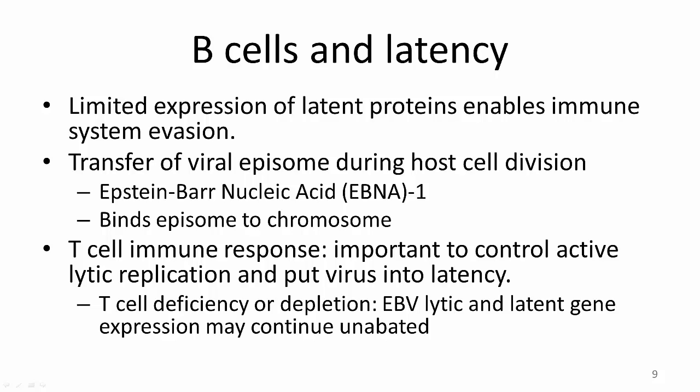This is performed by the Epstein-Barr nuclear antigen 1, or EBNA1, protein, which binds the viral episome to the chromosome during B cell division, allowing the viral genome to be maintained in the nucleus of the B cell. The host immune system, particularly the host T cell response, plays an important role in controlling active viral replication during acute infection, and in restraining EBV-infected B cells to keep the virus in the latent stage. In the setting of T cell deficiency or depletion, EBV lytic and latent gene expression may continue unabated. Therefore, patients with T cell defects are at higher risk for developing EBV-associated syndromes.